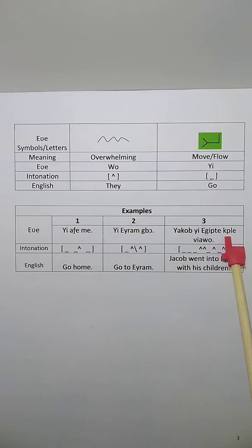In examples, there are three examples here. The first one is go home. Go home in ancient Hebrew is ye a f m. Ye a f m, low intonation, low intonation, high intonation, and low intonation. Ye a f m.